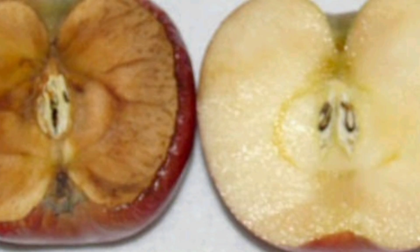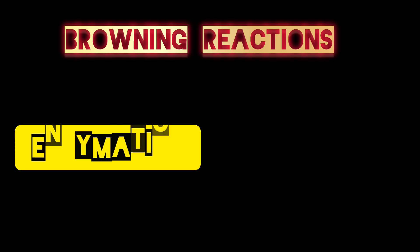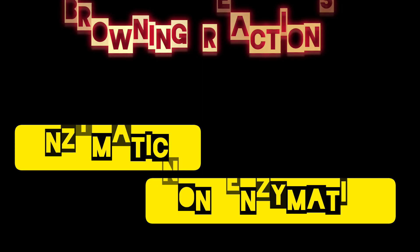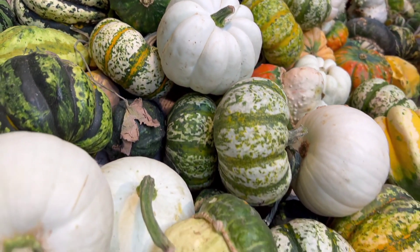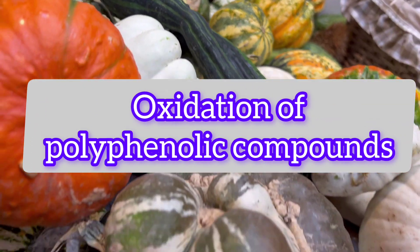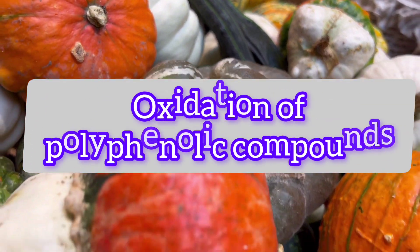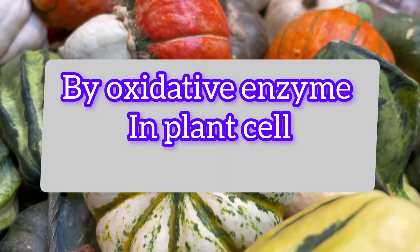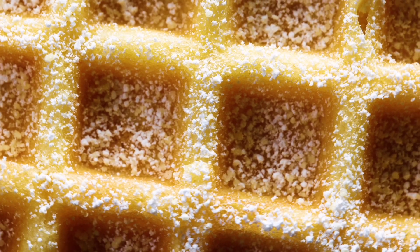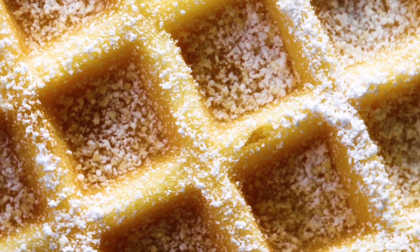Browning reactions may be either enzymatic or non-enzymatic. Many browning reactions seen in fruits and vegetables involve the oxidation of polyphenolic compounds by oxidative enzymes in plant cells. The non-enzymatic browning reaction frequently involves sugar and sugar-related compounds.